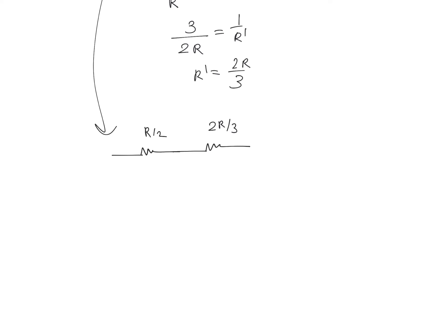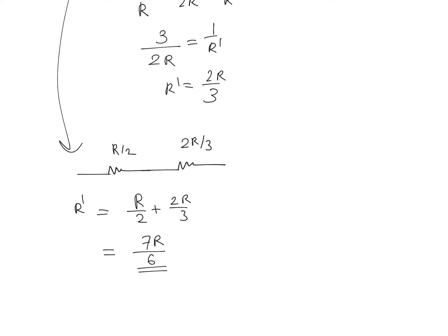The total equivalent resistance is R/2 + 2R/3 = 3R/6 + 4R/6 = 7R/6. Substituting R = L/(K·A), the effective resistance between A and E is 7L / (6K·A).